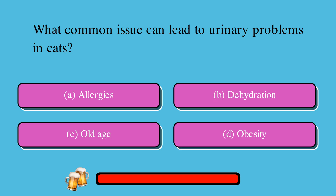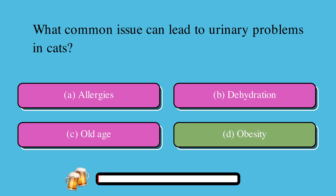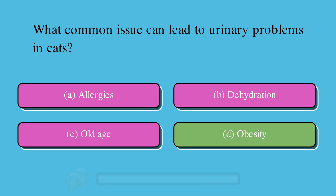What common issue can lead to urinary problems in cats? A. Allergies, B. Dehydration, C. Old age, or D. Obesity. The correct answer is D. Obesity.